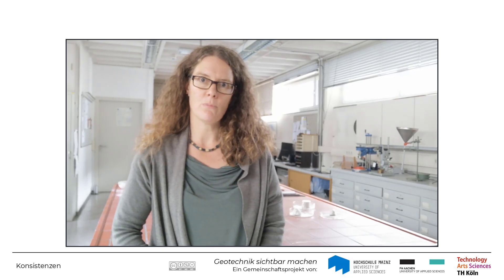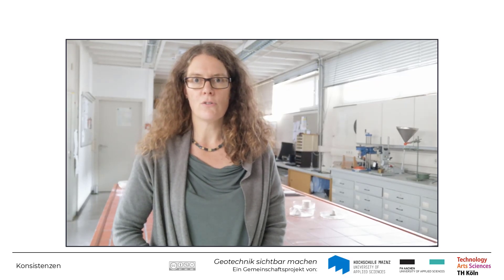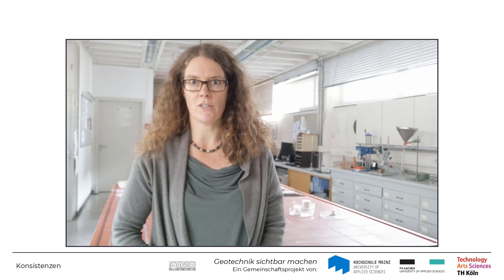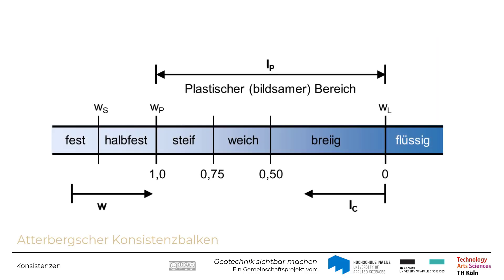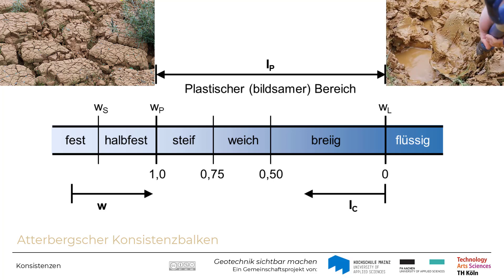Die Konsistenz eines bindigen Bodens beschreibt dessen Zustandsform. Diese Zustandsform ist vom Wassergehalt des Bodens abhängig. Mit steigendem Wassergehalt ändert sich die Konsistenz des Bodens vom festen über den halbfesten, steifen, weichen und breigen bis hin zum flüssigen Zustand. Diese unterschiedlichen Konsistenzen sind im Konsistenzband dargestellt.